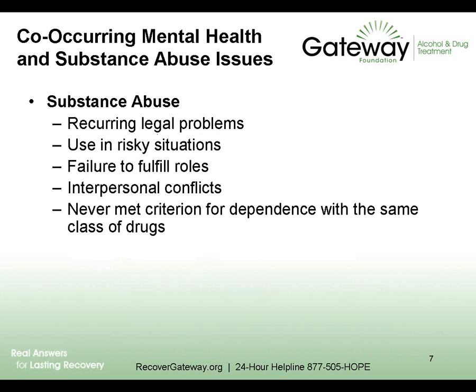When someone is diagnosed with substance abuse, typically one or more of these things have happened in the previous 12 months: recurring legal issues, risky behaviors, use in risky situations, failure to fulfill roles such as work or parenting, interpersonal conflicts — and they've never met criteria for dependence. Someone can never be diagnosed with alcohol dependence and then go back to just alcohol abuse; they can go into remission but not revert in diagnosis.